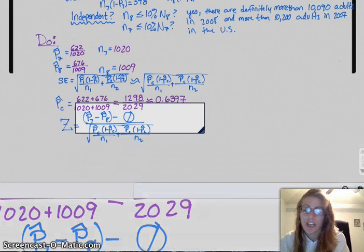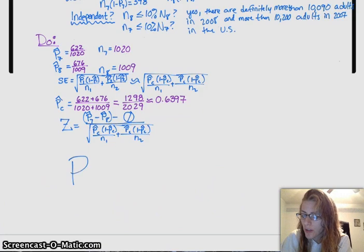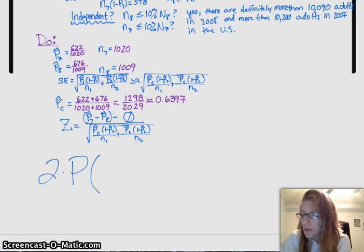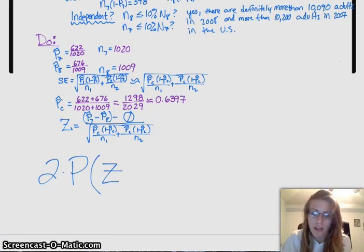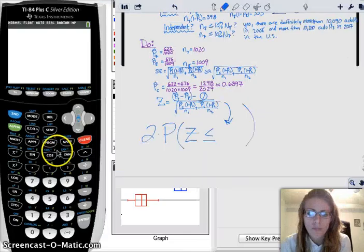Since we're assuming that those are equal, we can actually just set those equal to zero. And then I can just actually use my calculator to figure everything else out. My goal is to, because it's a two-sided test, I'm going to do two times the probability that Z is going to be less than or equal to whatever my value is, which I'm going to get from my calculator.